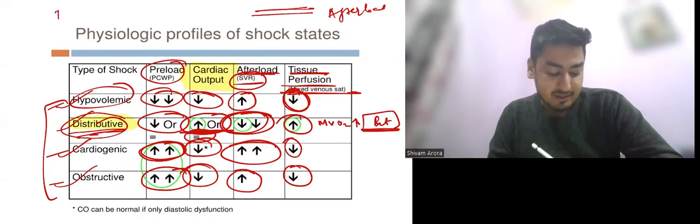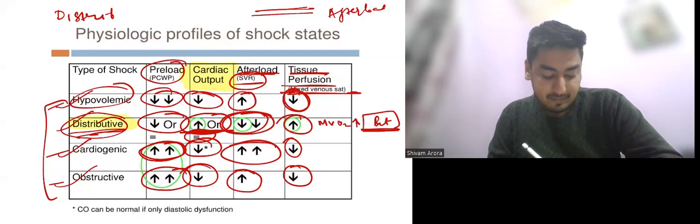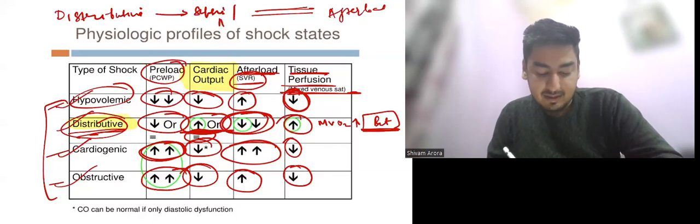The causes of distributive shock: one is sepsis, another one is anaphylaxis.